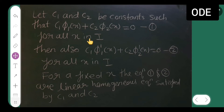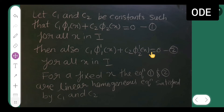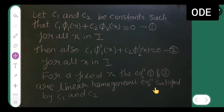Then also c1·phi 1'(x) + c2·phi 2'(x) = 0 — call this equation (2) — for all x in I. This second equation is obtained by differentiating equation (1). For a fixed x, equations (1) and (2) are linear homogeneous equations satisfied by c1 and c2.